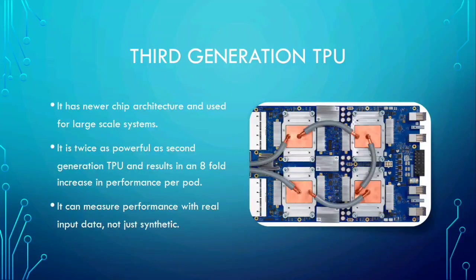Third generation TPU. The third generation TPU was announced on May 8, 2018. Google announced that the processors themselves are twice as powerful as the second generation TPUs and would be deployed in pods with four times as many chips as the preceding generation. This results in an eight-fold increase in performance per pod compared to the second generation TPU deployment.